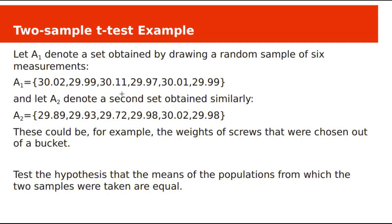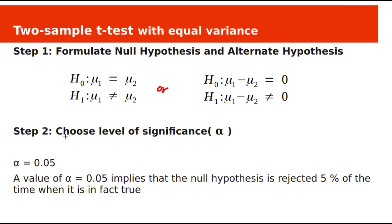Let us see one example. Samples a1 and a2 are two samples of weights of screws chosen from a bucket. Test the hypothesis that the means of the populations from which two samples were taken are equal. Null hypothesis H0: mu1 equals mu2 — there is no difference between population means. Alternate hypothesis H1: mu1 not equal to mu2 — population means are different. Let us assume alpha is 0.05.